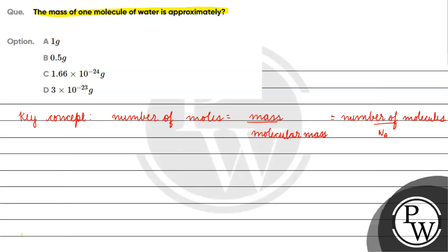Now, what is given in the question? We have to find out the mass of one molecule of water. How much is the molecular mass of water? We have 18 gram per mole.